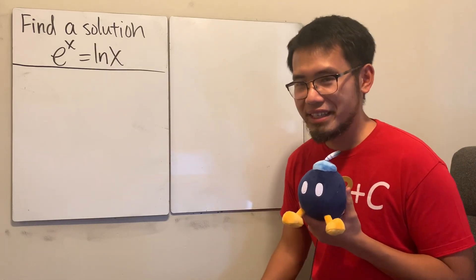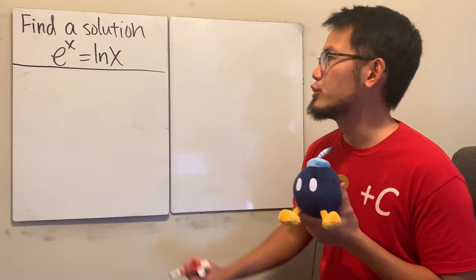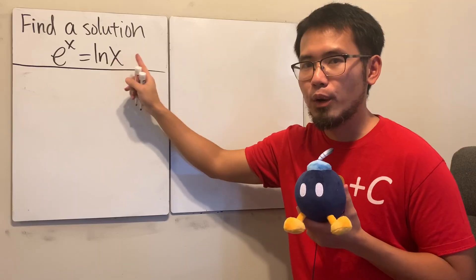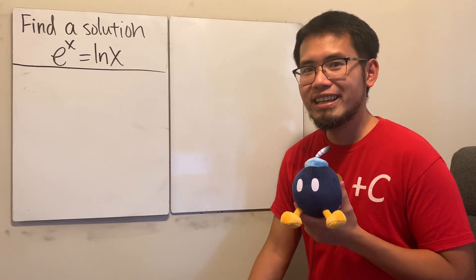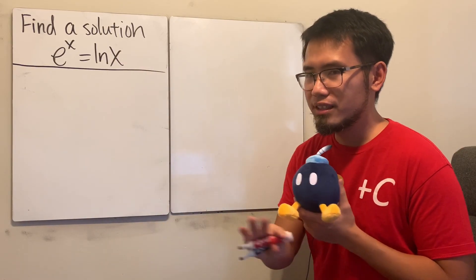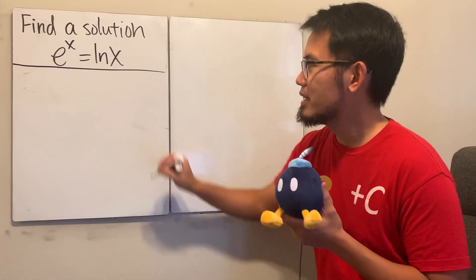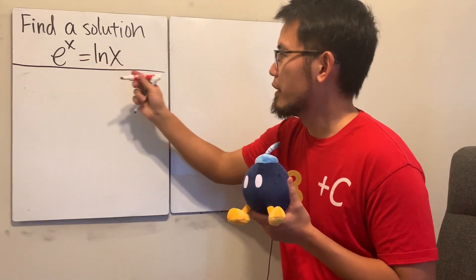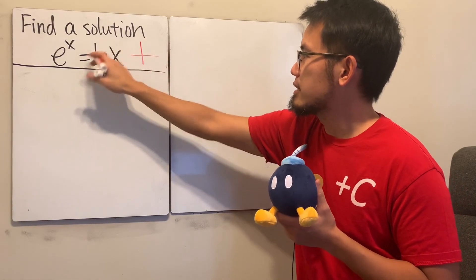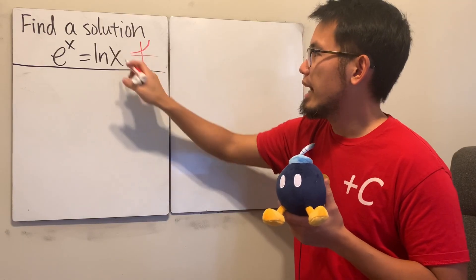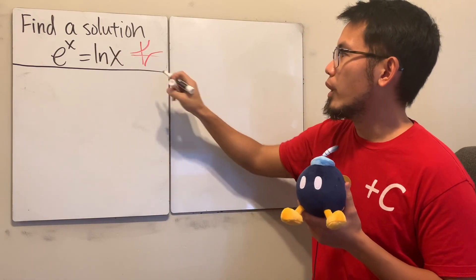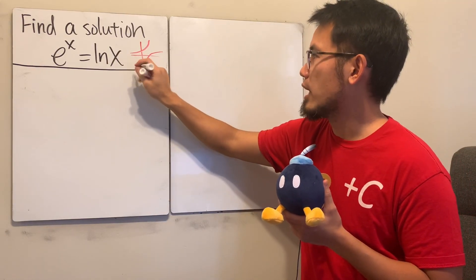Hello, let's do some math for fun. Here we are going to find a solution to the equation e to the x that's equal to ln(x). And you can expect that the answer is not real, because if you graph ln(x) and e to the x, you will see that e to the x is like this and ln(x) is like that — they will not cross each other.